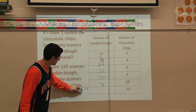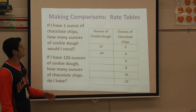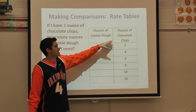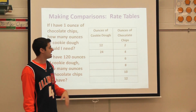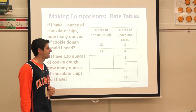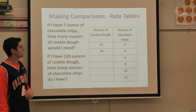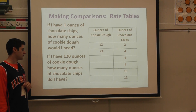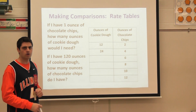Now it's going to be your turn — the most fun part of the video. This is your rate table with ounces of cookie dough and ounces of chocolate chips. You're going to complete the left-hand side of the chart, then answer two questions: if I have one ounce of chocolate chips, how many ounces of cookie dough would I need? And if I have 120 ounces of cookie dough, how many ounces of chocolate chips do I have? Grab your pencil, grab some paper, and pause the video.